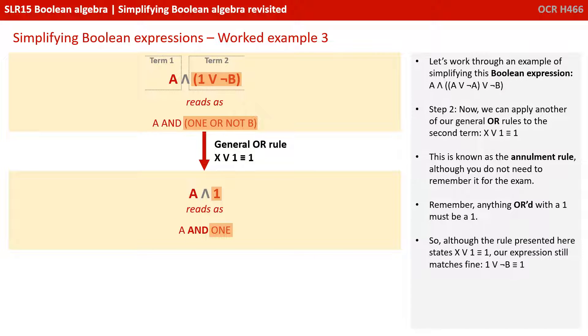Step two: now we can apply another of our general rules to the second term. This is known as the annulment rule. Remember, anything OR'd with a 1 must be a 1. So although the rule presented here states X or 1 is equivalent to 1, our expression still matches fine. 1 OR NOT B must equal 1.